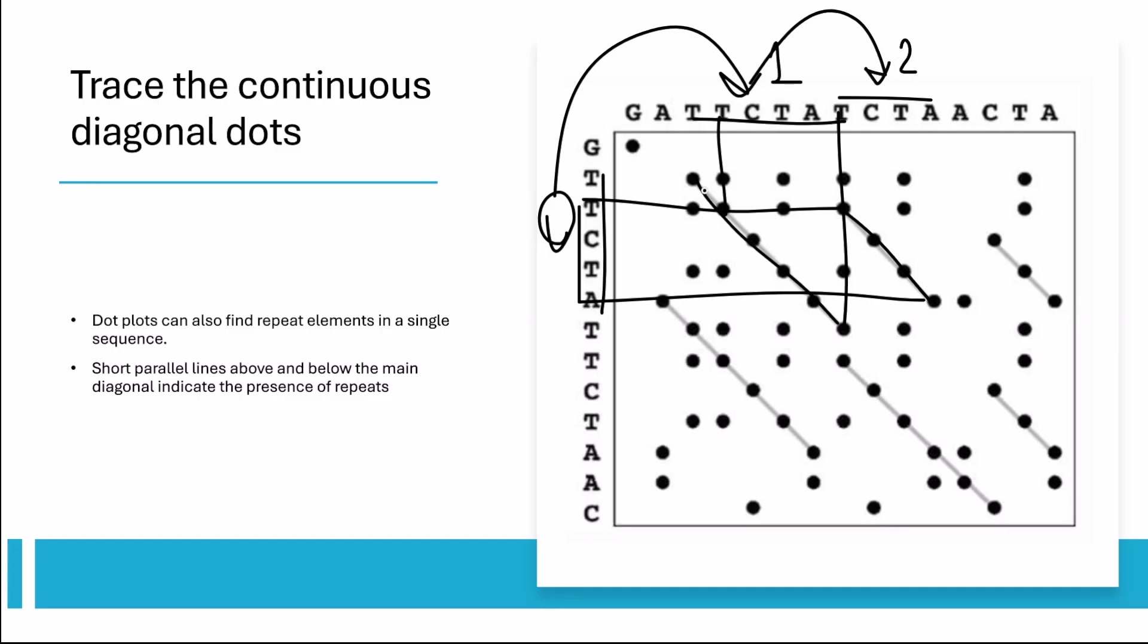The lines which are above and below the main diagonal are actually the repeat elements that dot plot highlights.